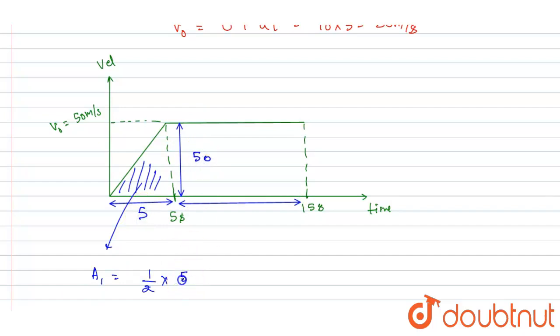This area, let's say A2, is a rectangle basically. So this is 10, this is 50, so it will be simply 10 into 50, that is 500 meters.